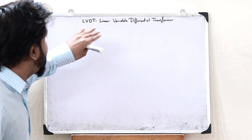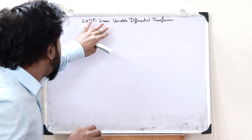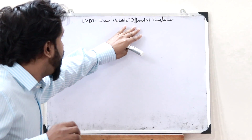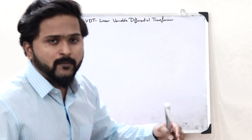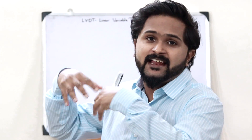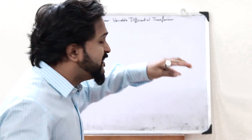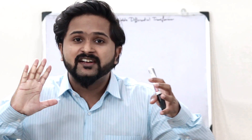LVDT is the abbreviation for Linear Variable Differential Transformer. This Linear Variable Differential Transformer is a type of inductive transducer. A transducer is a device that converts a physical quantity into an electrical signal. But here in the case of an LVDT, it converts a displacement into a particular electrical signal.